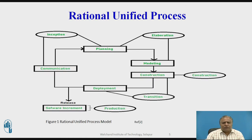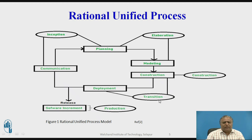This is the diagram of Software Unified Process. In Software Unified Process, there are mainly five phases. The first phase is Inception, the second phase is Elaboration, third phase is Construction, fourth phase is Transition, and fifth phase is Production. In Inception, communication and requirements gathering and planning are done. In Elaboration phase, different models are created for the project. In the Construction phase, designing, development and testing are done. In Transition phase, the actual deployment of the software to the customer is done, taking software increments during each and every release.